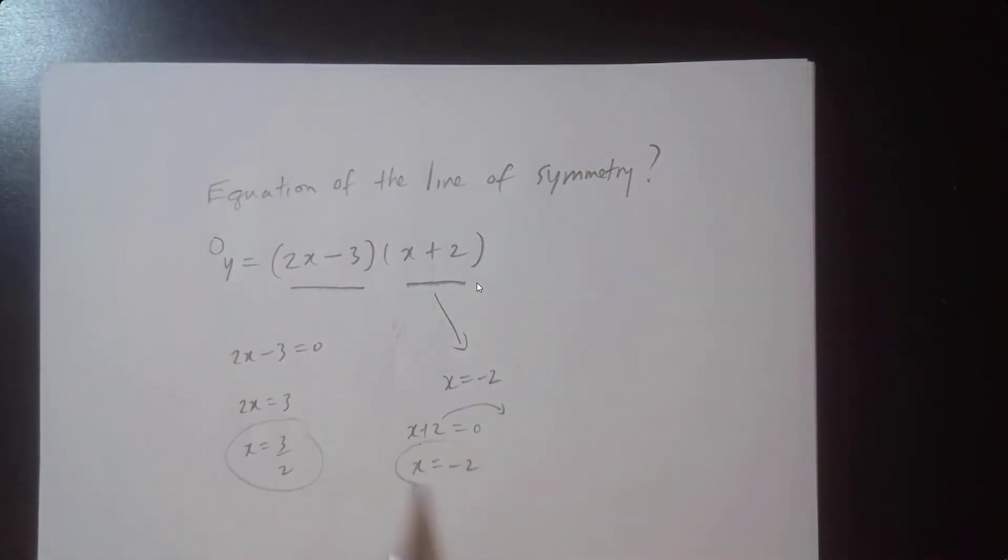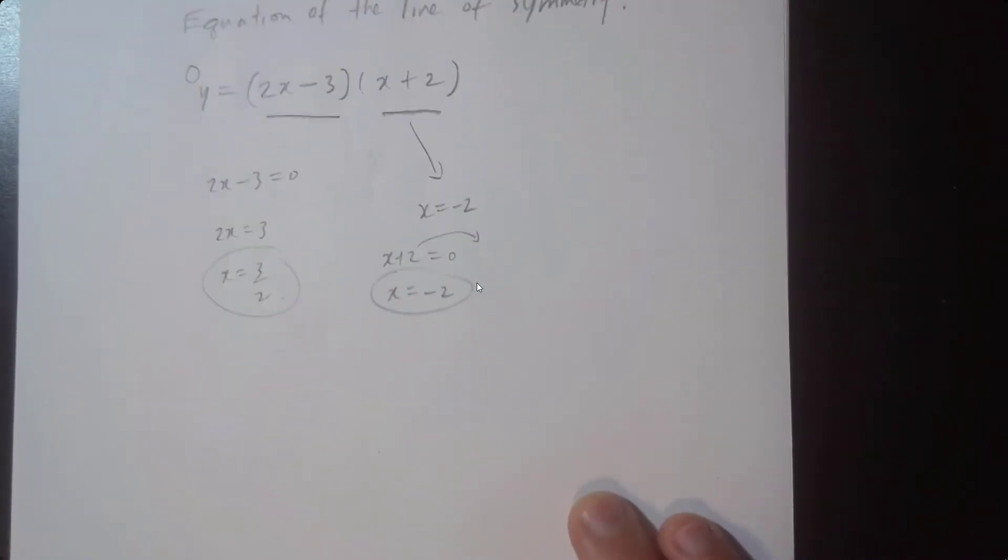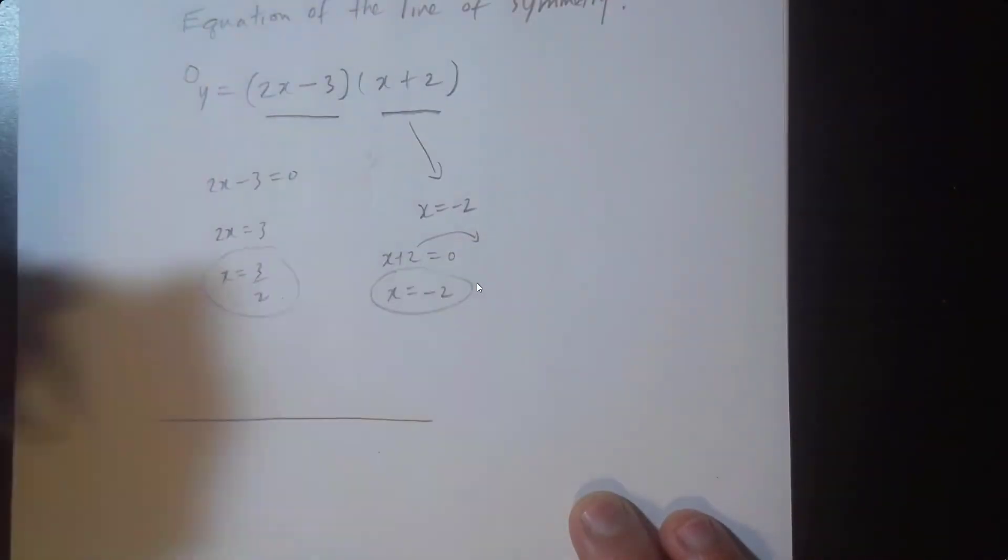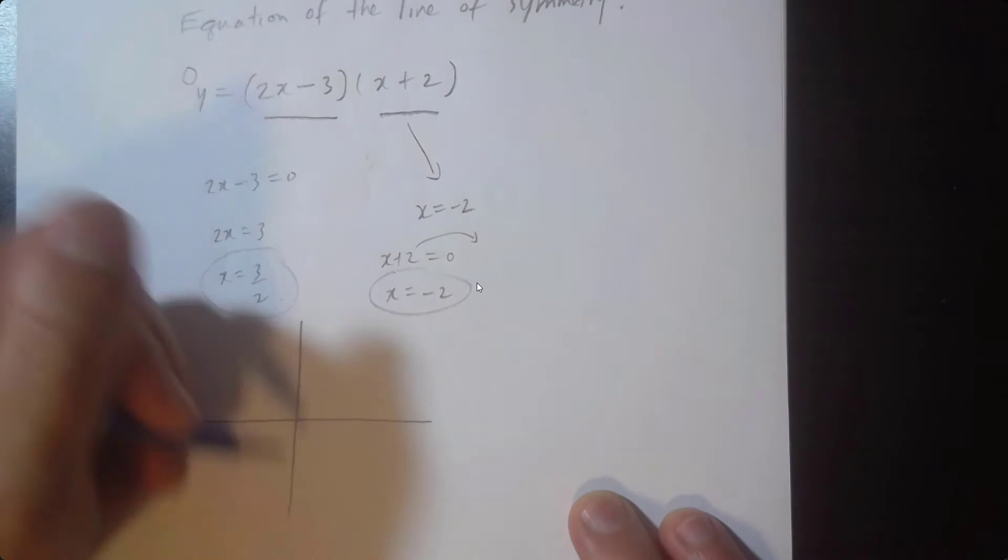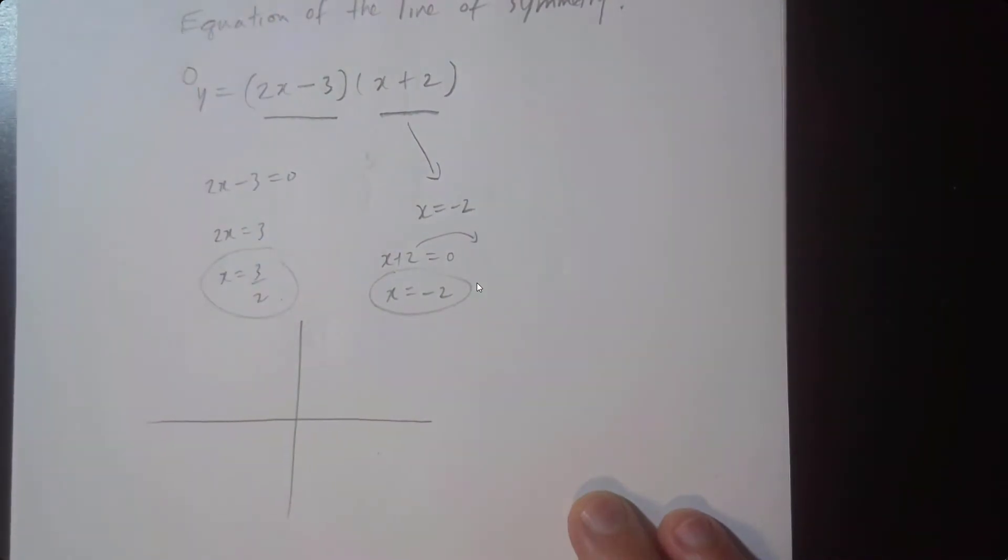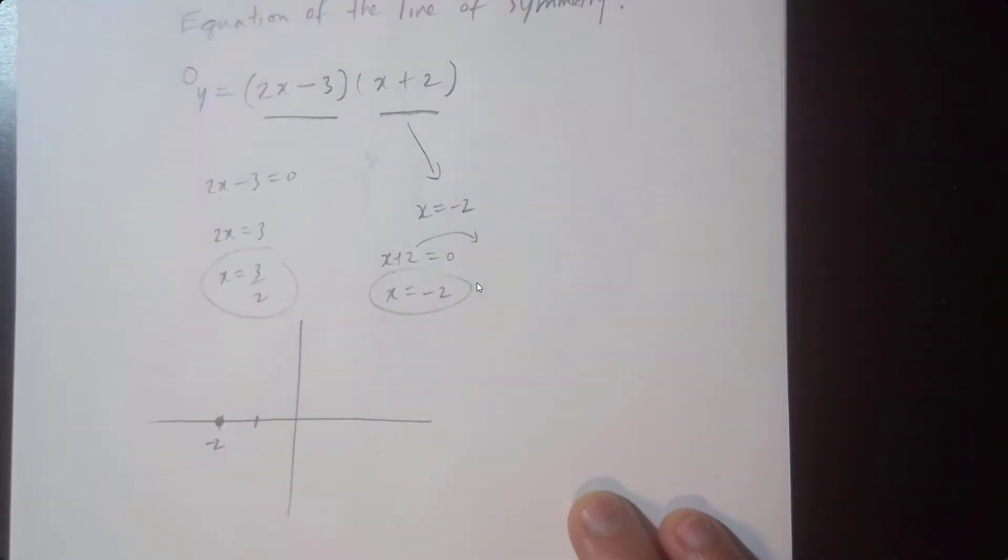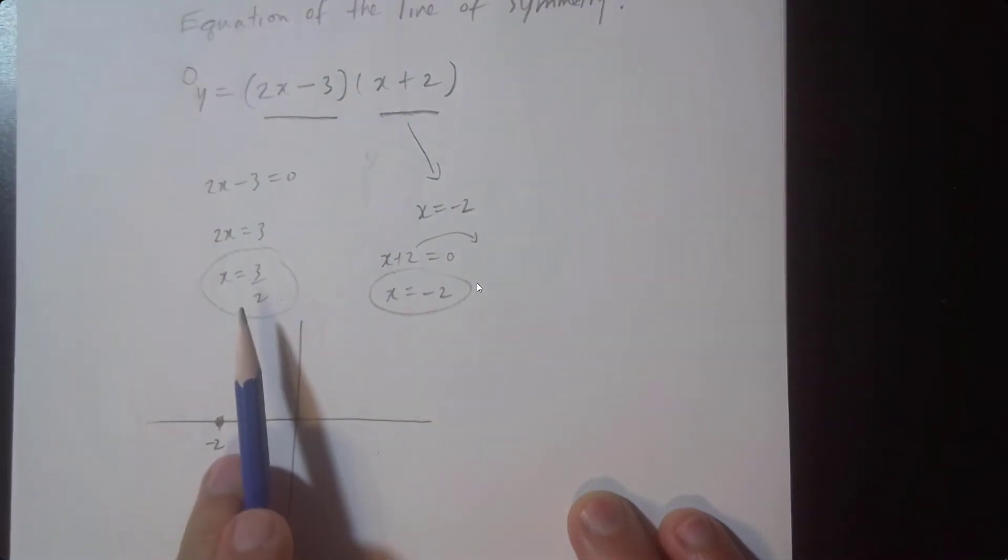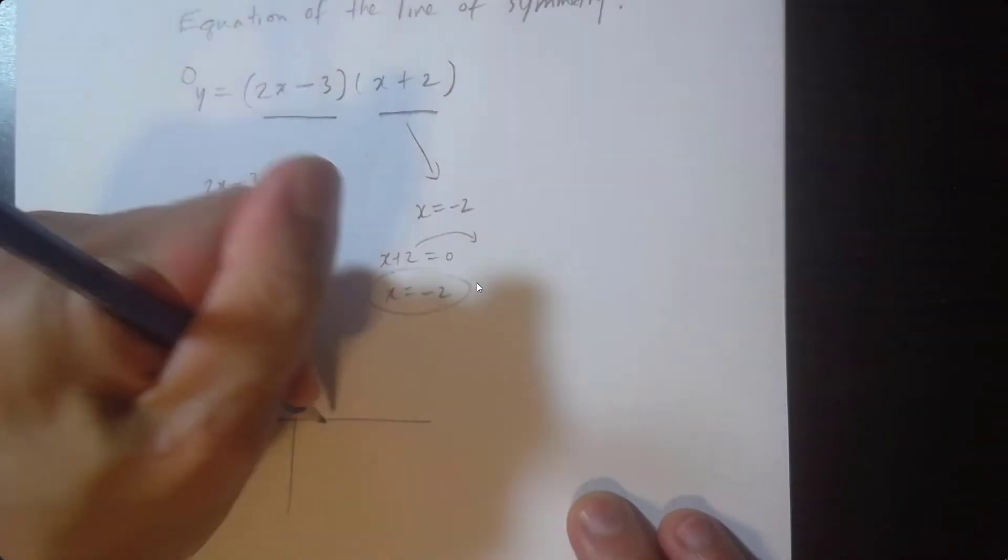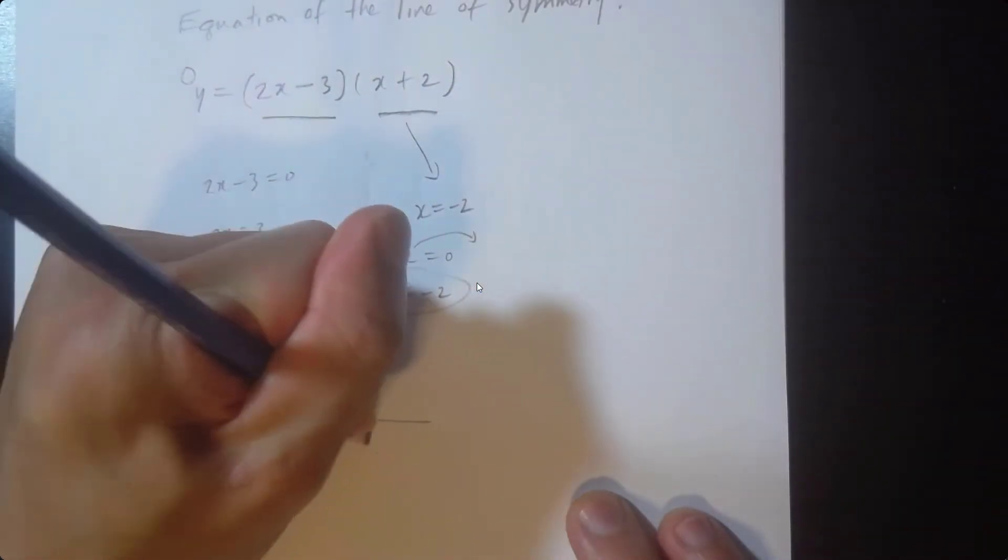So this here, what we have are like teeth. This is the x-axis. Negative 2 would be 1, 2 to the left. I'm going to draw a nice big dot here, and 3 over 2 is going to be 1.5, so 1, 2, we'll draw a dot here.